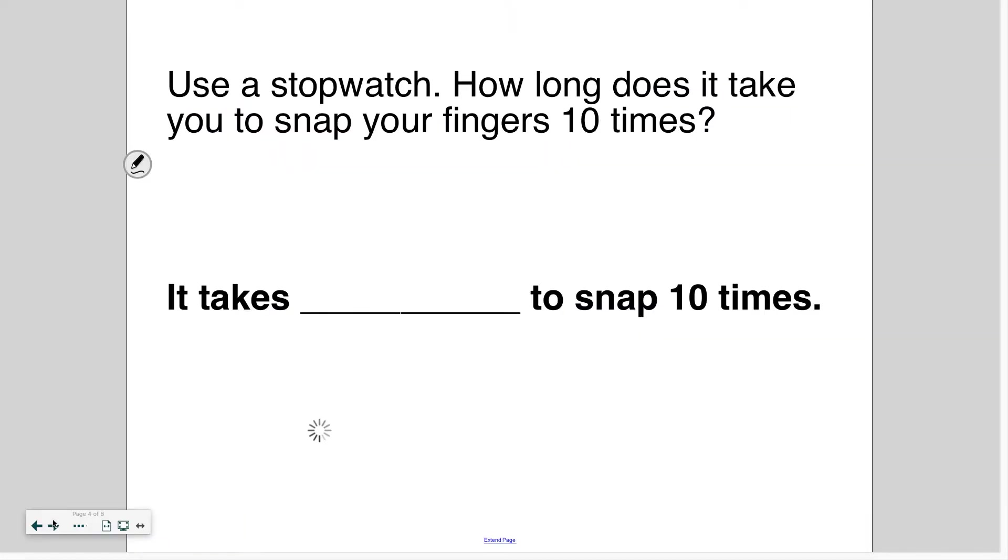So we're going to use a stopwatch, like it said in the learning tension, to measure how long it takes us to do different activities. I'm going to model that. Use a stopwatch. How long does it take you to snap your fingers 10 times? So how I'm going to measure this is I'm going to press start or play right before I start. And then I'm going to snap my fingers 10 times. Once I snapped my finger the 10th time, I'm going to pause to see how much time has elapsed or how much time has passed since I started. So let me go ahead and do that. So it took me six seconds to snap 10 times.